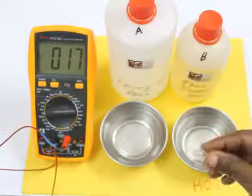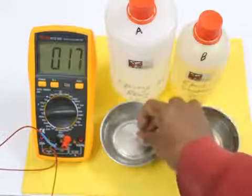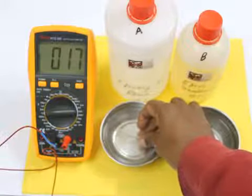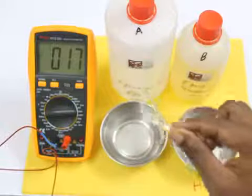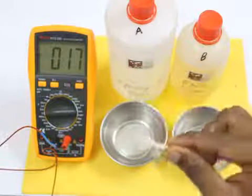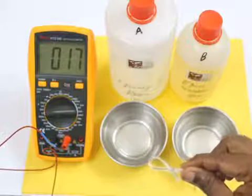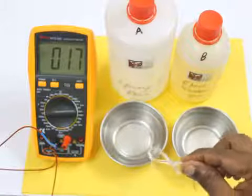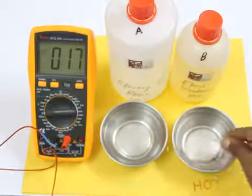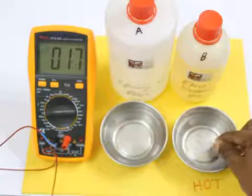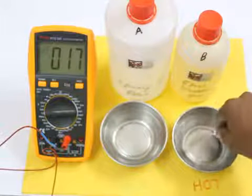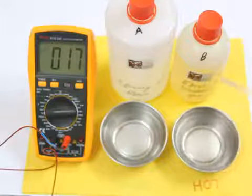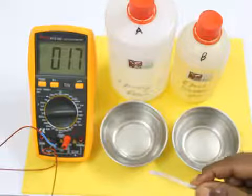When I subject it to colder temperatures, it goes into something called glassy phase, and in this phase it is very stiff. The shape essentially gets locked at these temperatures, but once I again bring it back to warmer temperatures, it remembers its original shape and comes back to that particular shape.